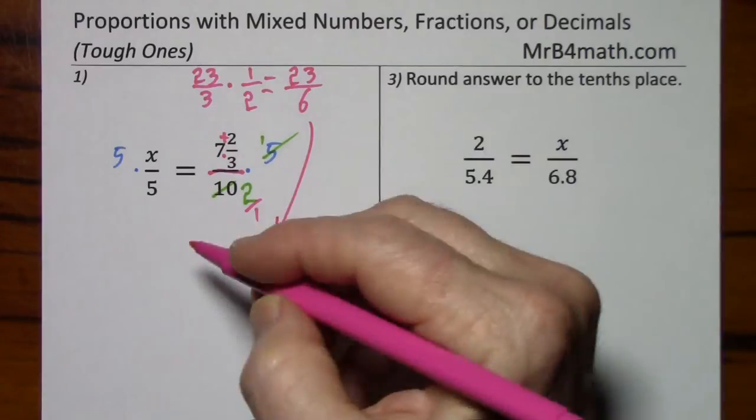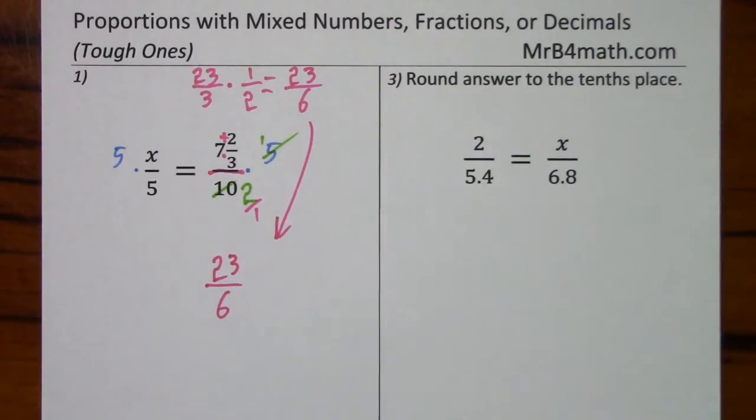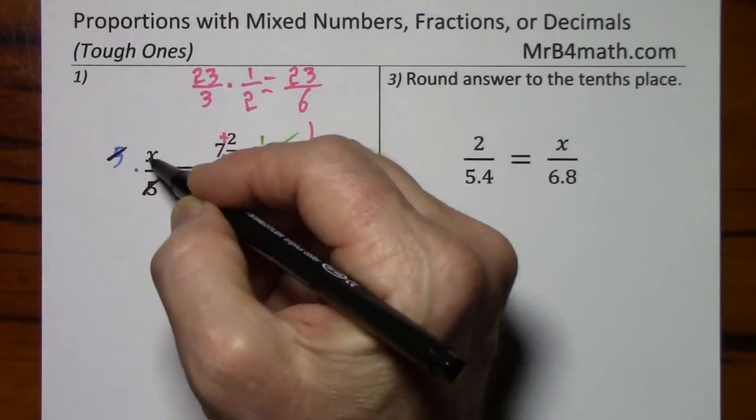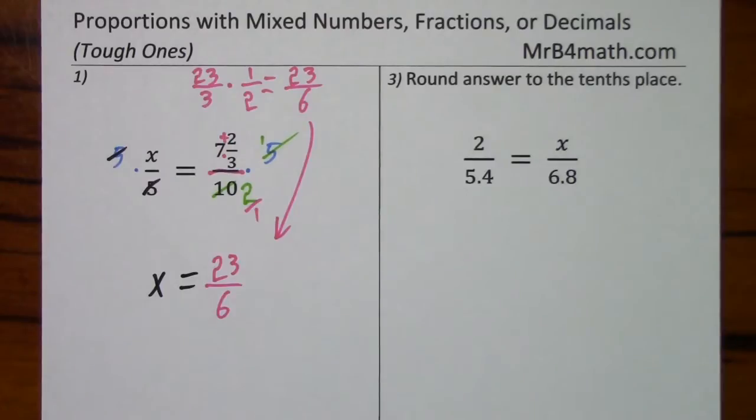I'll just put it down here. And again, 5 cancelled 5. You're left with x is equal to 23 sixths.